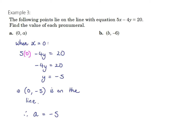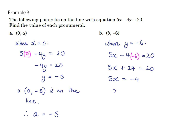In part b, the point (b, negative 6) lies on the line, so we find x when y equals negative 6. Substituting: 5x minus 4 times negative 6 equals 20, so 5x plus 24 equals 20. Subtracting 24 from both sides and dividing by 5 gives x equals negative four fifths. Therefore b equals negative four fifths, and the point (negative 4/5, negative 6) is on the line.